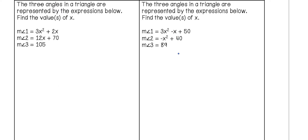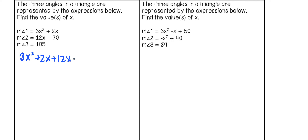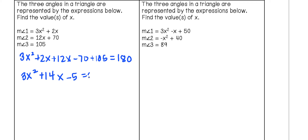In the last two examples, we're looking at three angles in a triangle. The sum of angles in a triangle is always 180 degrees, so we add all three angle expressions and set them equal to 180. Combining like terms and setting the equation equal to 0 gives 3x squared plus 14x minus 5 equals 0. There's no GCF to factor out, so we multiply 3 times negative 5 to get negative 15, and look for factors of negative 15 that add to positive 14 — that's 15 and negative 1.